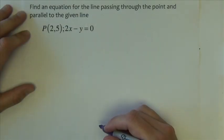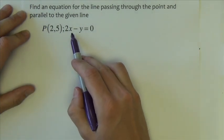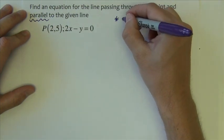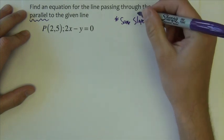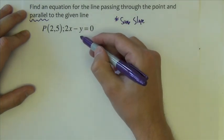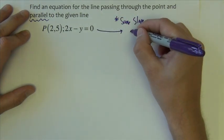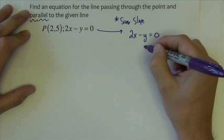This example asks us to find the equation for a line that passes through this point and is parallel to this line. If it's parallel, that means it's going to have the same slope as this line. So the first thing I have to do is find the slope of this line. To find the slope of this line, I need to solve it for y.